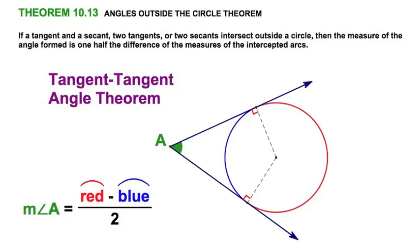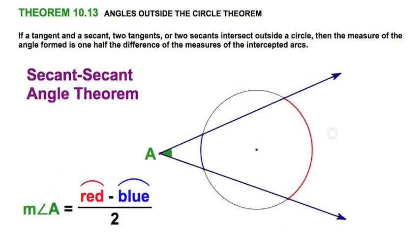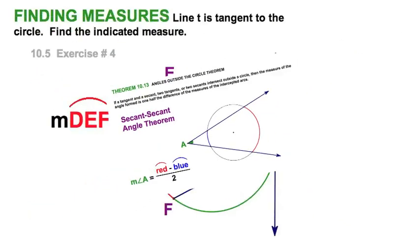And the third in the set, that would be secant, secant. And this, as well, red minus blue divide by 2 will be the measure of angle A. And there you have it. Three theorems for the price of one.